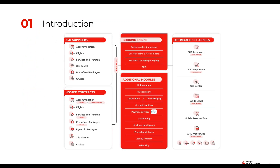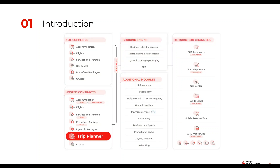We start with this diagram, which gives some context to this module. Here we have an overview of the modules currently available in Juniper. On the left side we can see the products to be sold, coming from both external suppliers as well as own contracting. The rules for all these products are defined in the Juniper back-office or intranet, where you can configure your clients, intranet users, or business rules such as markups, commissions, taxes, etc. On the right side we can see all the different types of distribution channels that Juniper offers. In the case of the Juniper Trip Planner, this module would be part of the Booking Engine.